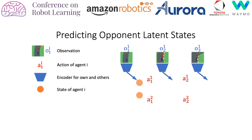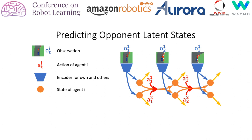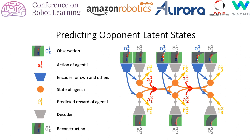Additionally to predicting own observations, the agent is trained to predict the opponent's observations from the same embedding, without having access to the opponent's view. This allows our agents to learn reasoning about opponent behavior.